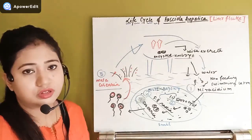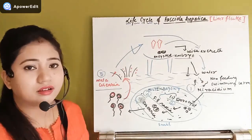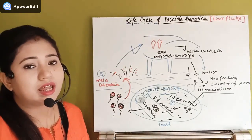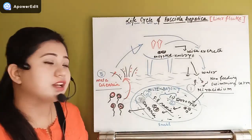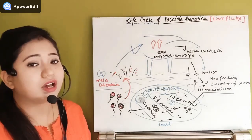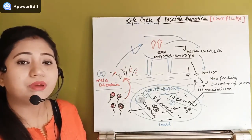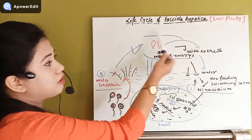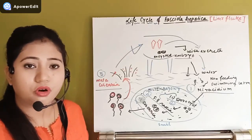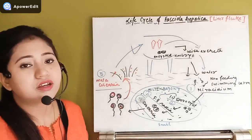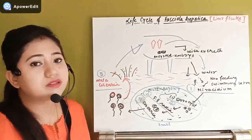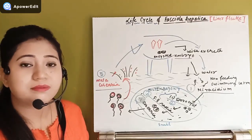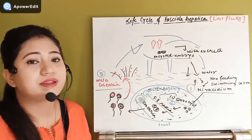That is all about the life cycle of Fasciola hepatica, which causes liver rot. It completes its life cycle in two hosts: the primary host — sheep or goat — where the sexual life cycle occurs, and the secondary host — the snail — where asexual metamorphosis takes place. The PDF provided contains all the details.